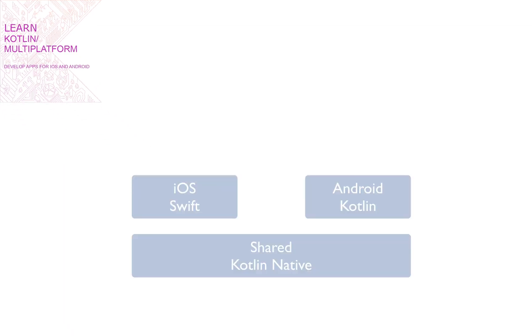Kotlin Native Multiplatform is a new way to build mobile apps. You create common code that will be used for both platforms. Here you place all logic, network calls, data structure and so on.